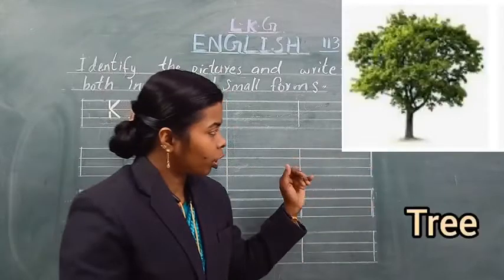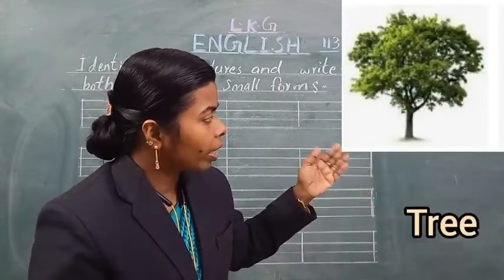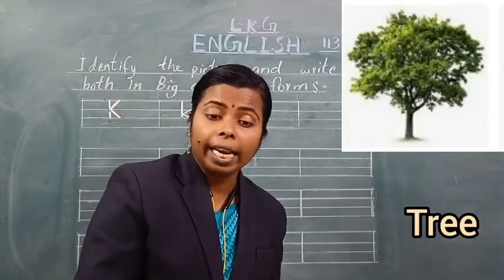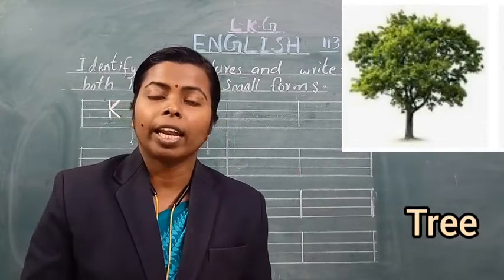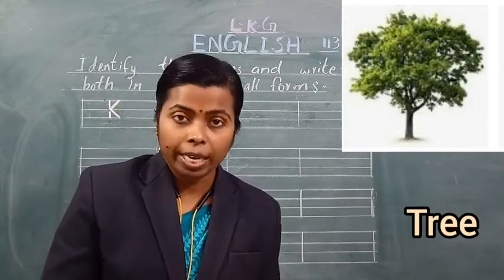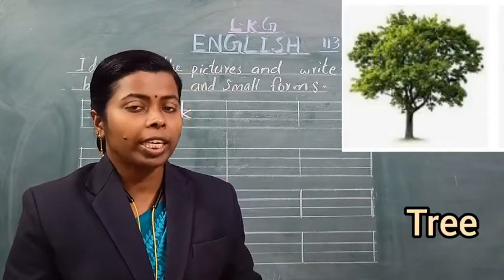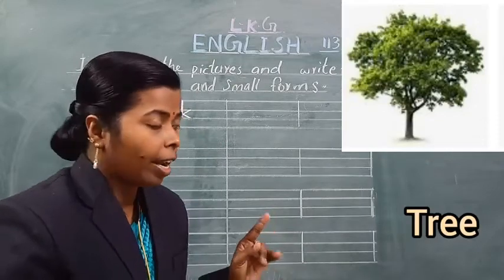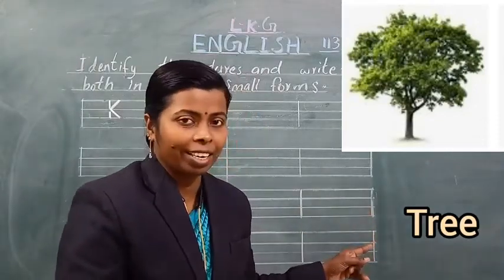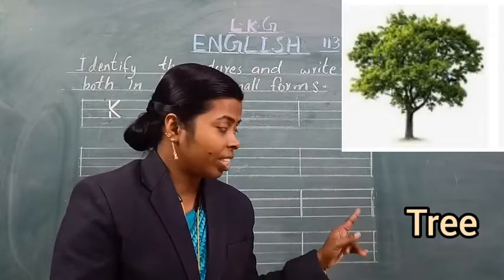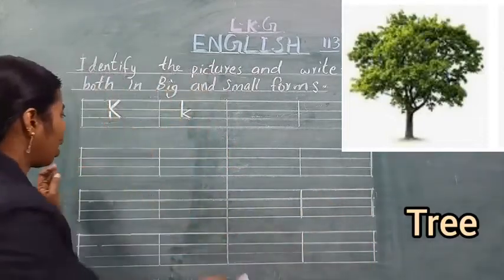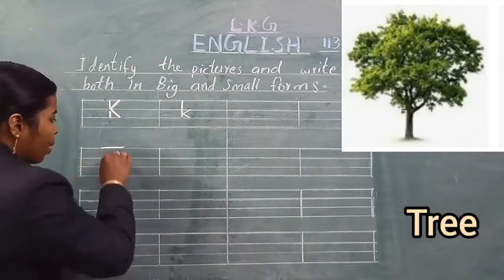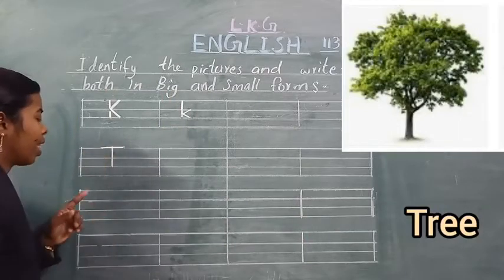See the next picture. Yeh kya hai? What is this? This is a tree. Spell the word tree: T-R-E-E. Tree. Tree ka spelling kya hai? T-R-E-E. Tree. See the first letter — T. First letter T hai.